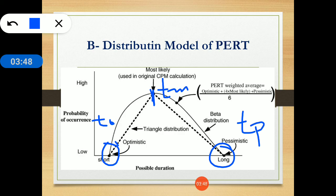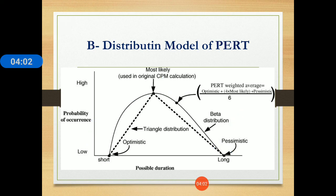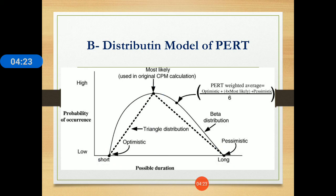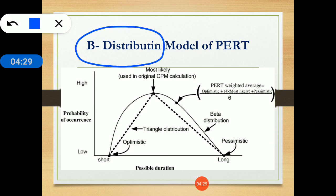In PERT, three times are always given: optimistic time TO, most likely time TM, and pessimistic time TP. Optimistic time is the shortest time for the activity. Pessimistic time is the longest time for that particular activity, and most likely time is the average time for that activity. The time estimates in PERT follow the beta distribution.